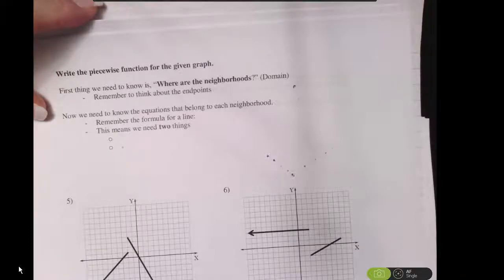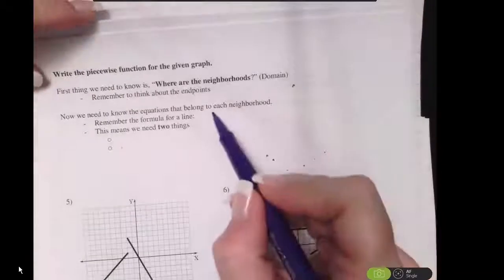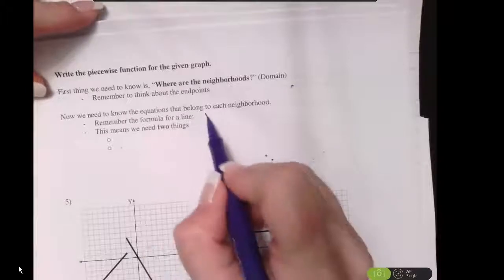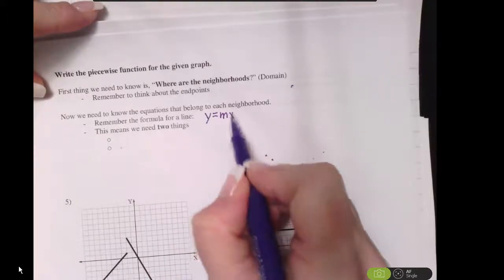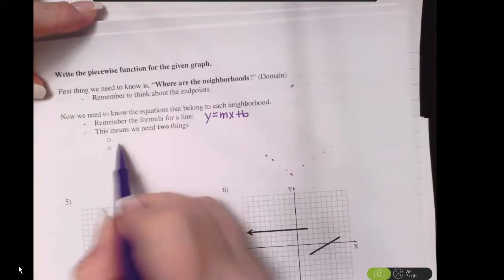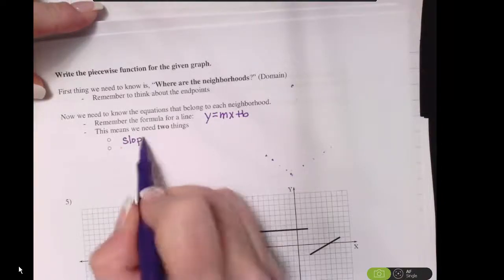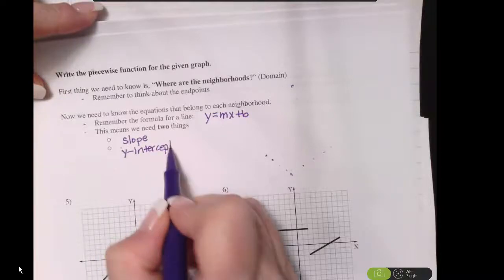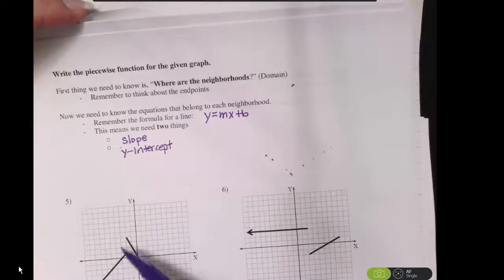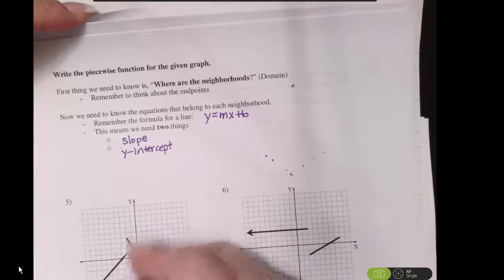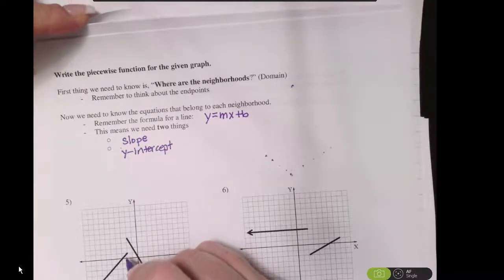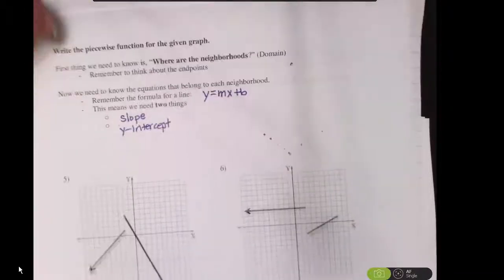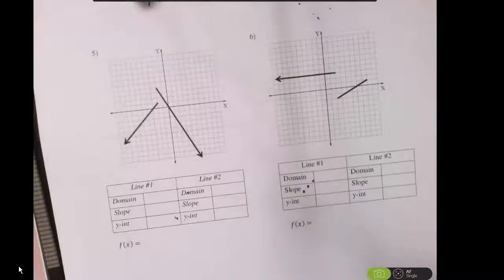Looking at problem number 5, the formula for a line is y equals mx plus b — we need the slope and the intercept. In my notes I don't have open circles or closed circles, so I'm going to go ahead and fill those in based on how my graph looks. I'm going to put a closed circle here and an open circle here.